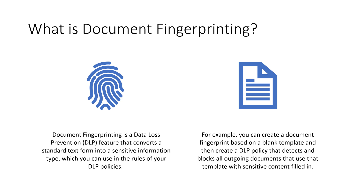What is document fingerprinting? Document fingerprinting is a data loss prevention feature in Microsoft 365 that converts a standard text form into a sensitive information type, which you can use in the rules of your DLP policies. For example, you can create a document fingerprint based on a blank template, then create a DLP policy that detects and blocks all outgoing documents that use that template when there's sensitive content filled in.